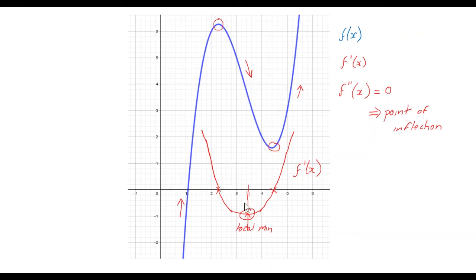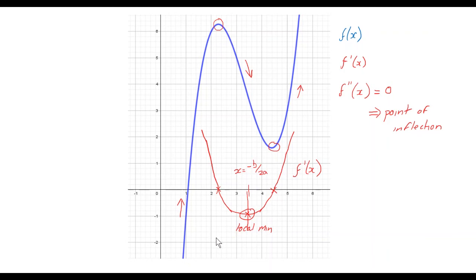We also know that the line of symmetry of a quadratic is given by x = -b/2a, where a and b are the coefficients of x² and x. You might like to explore how, for a cubic function, we can determine the coordinates of the point of inflection in general — without going through differentiating each individual f'(x) and f''(x) — though this shortcut only works for cubic functions.